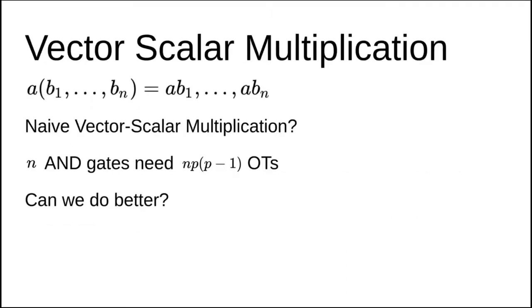Our work shows that conditional branching can be efficiently achieved via Vector Scalar Multiplication. Therefore, we demonstrate how Vector Scalar Multiplication can be efficiently implemented. The naive approach for vector of size N would require N AND-gates and thus N times P times P minus 1 OTs. We can do much better than that.